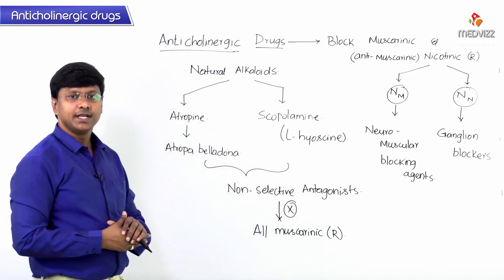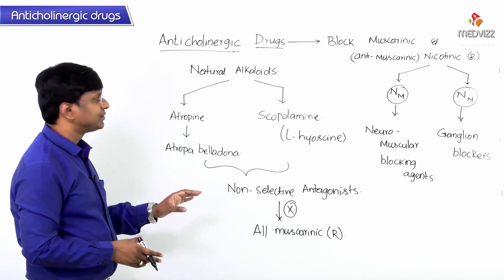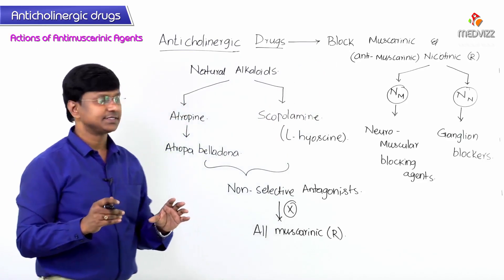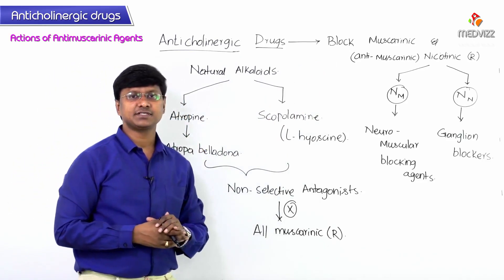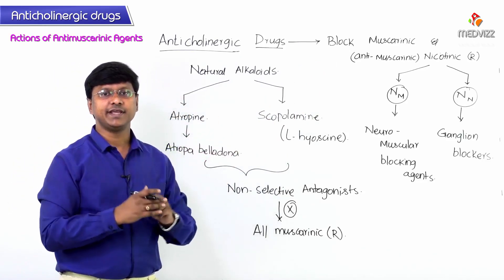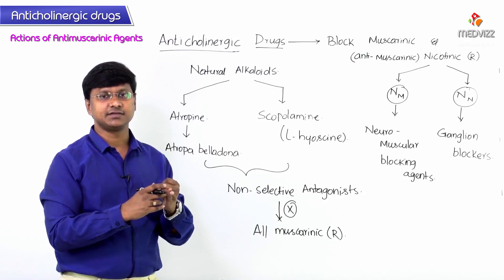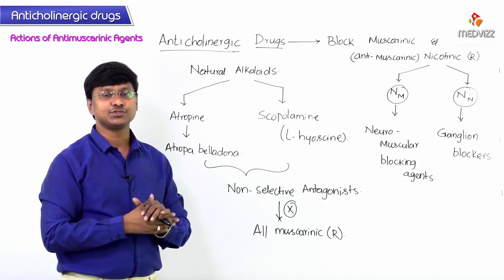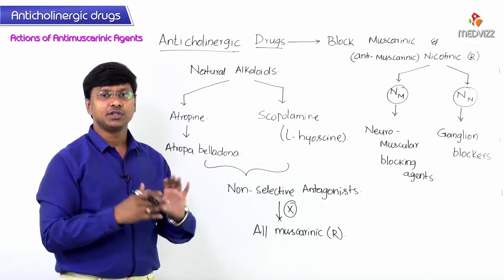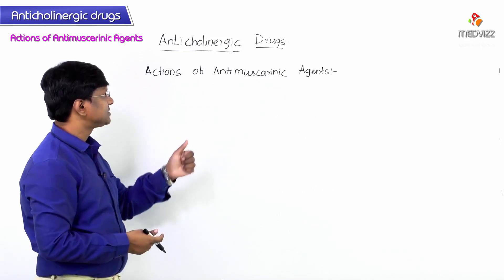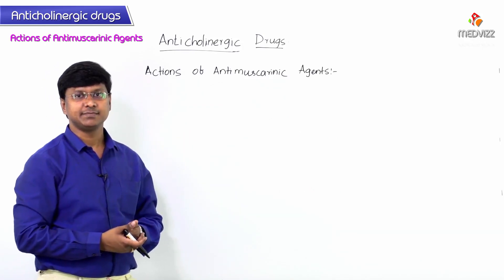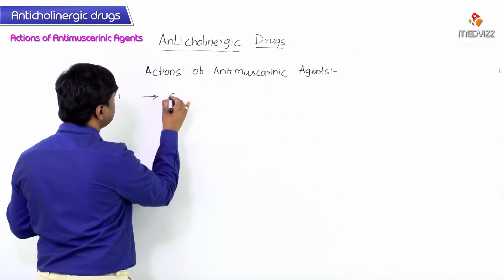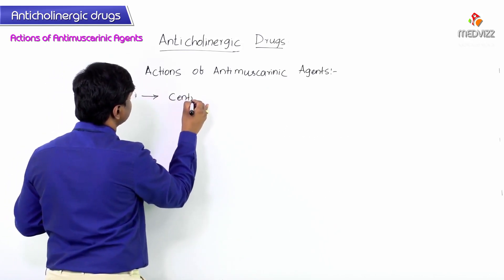Now let me tell you the actions of the antimuscarinic agents. These agents act on various systems such as the central nervous system, the GIT, and the respiratory system. Let me discuss the actions on each of these systems, starting with the central nervous system.